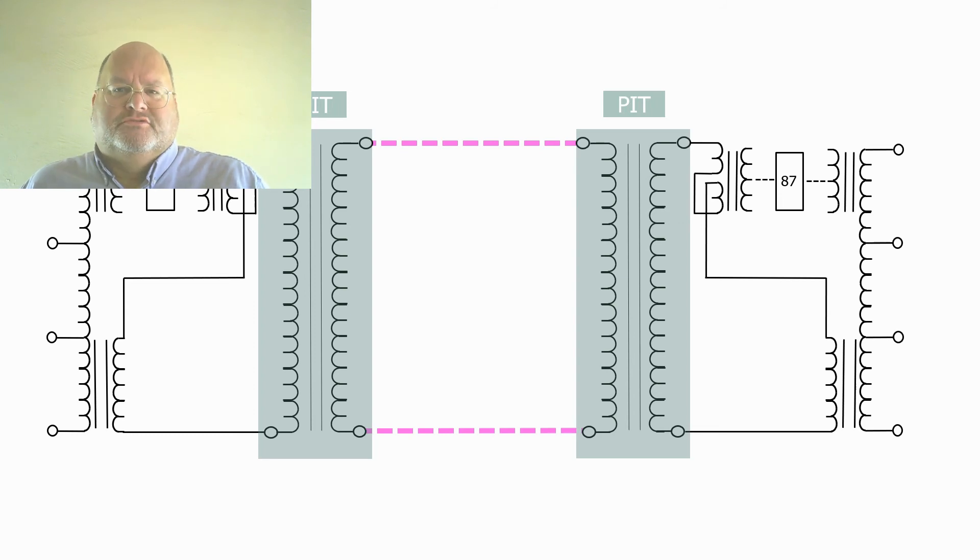Many of the old pilot wire protection systems used the copper telephone network to communicate between the two feeder ends as it was the only reliable way to do it, especially in rural areas. And while these are still seen today they are fewer in number.